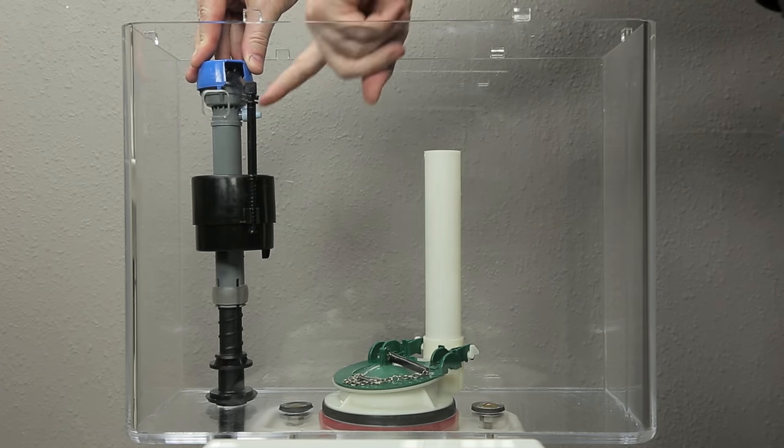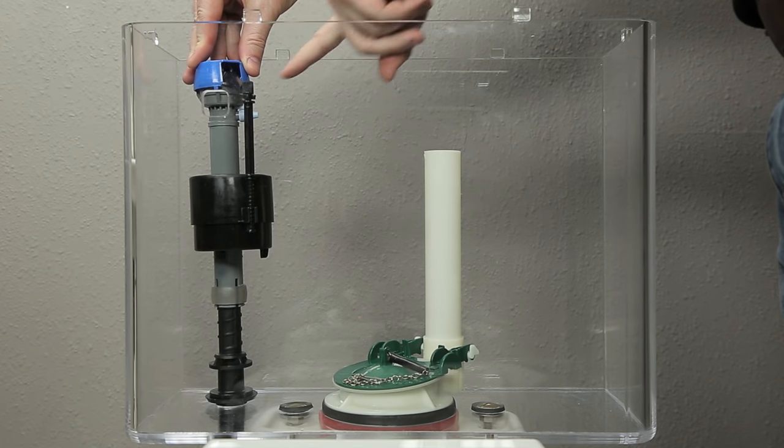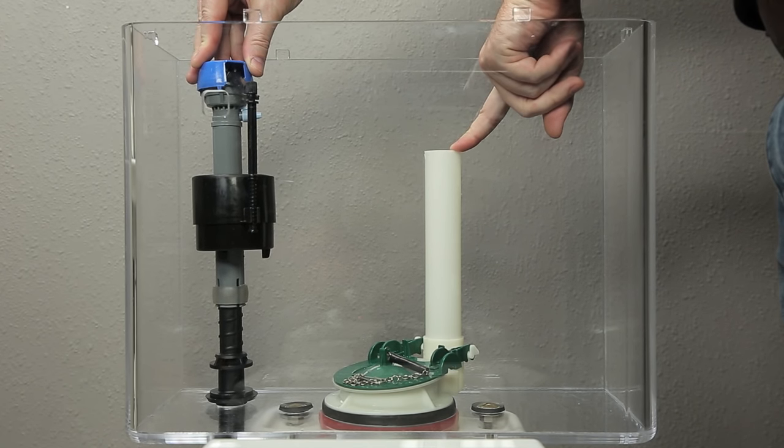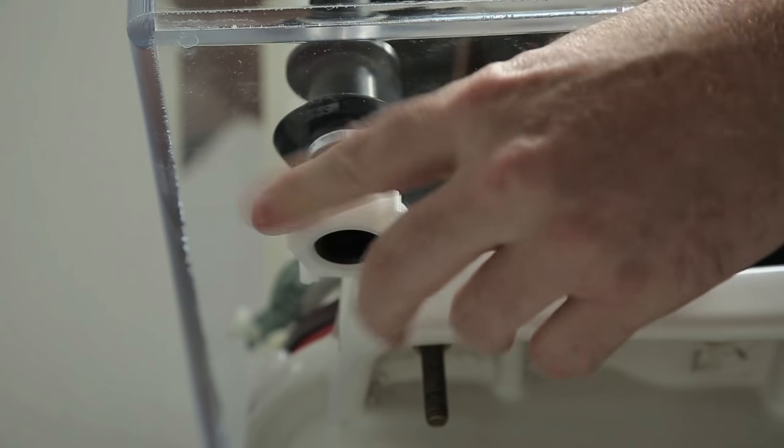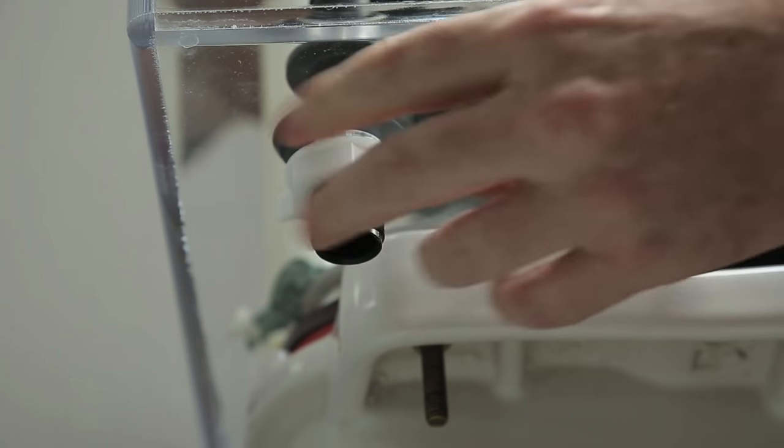Place the fill valve into the tank so that the refill nipple is pointing toward the overflow pipe. Hold the shank of the fill valve in place while tightening the lock nut in a clockwise direction. Hand tighten the lock nut only.